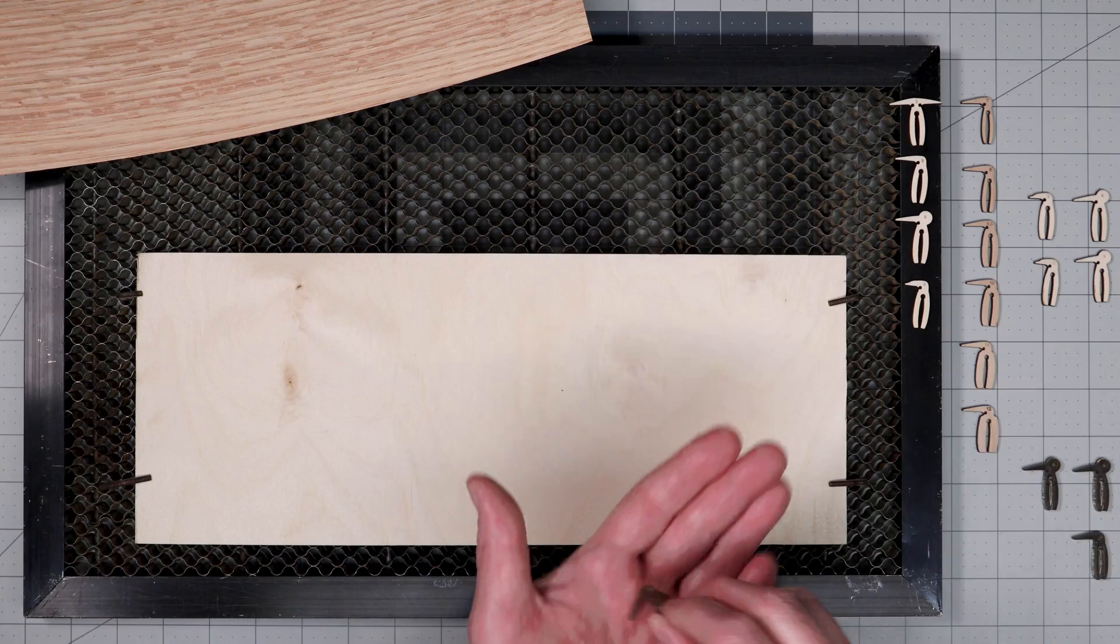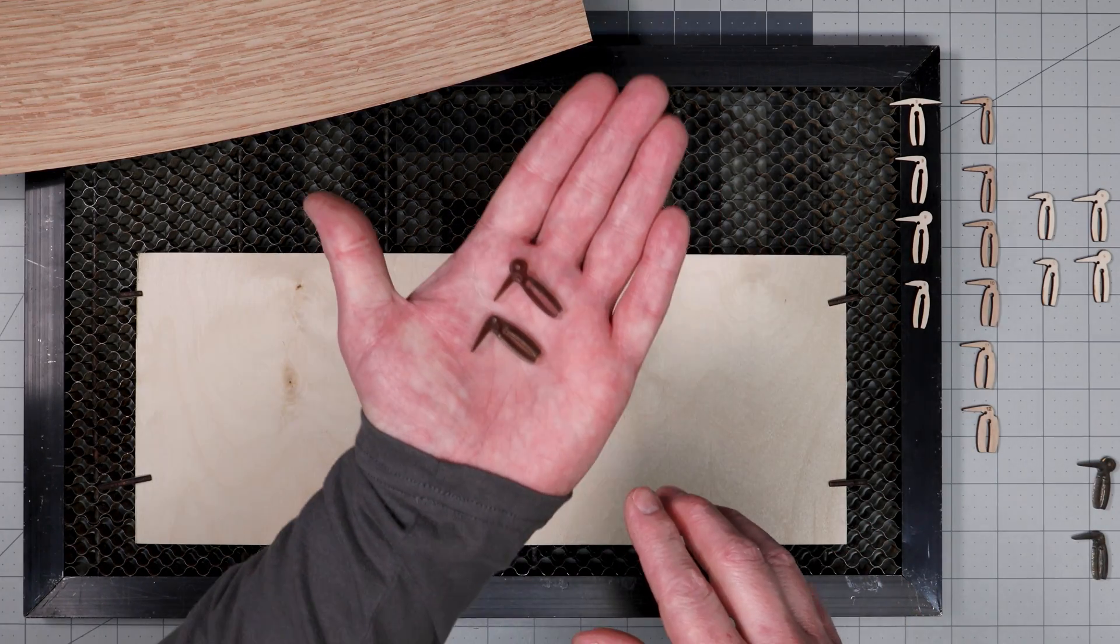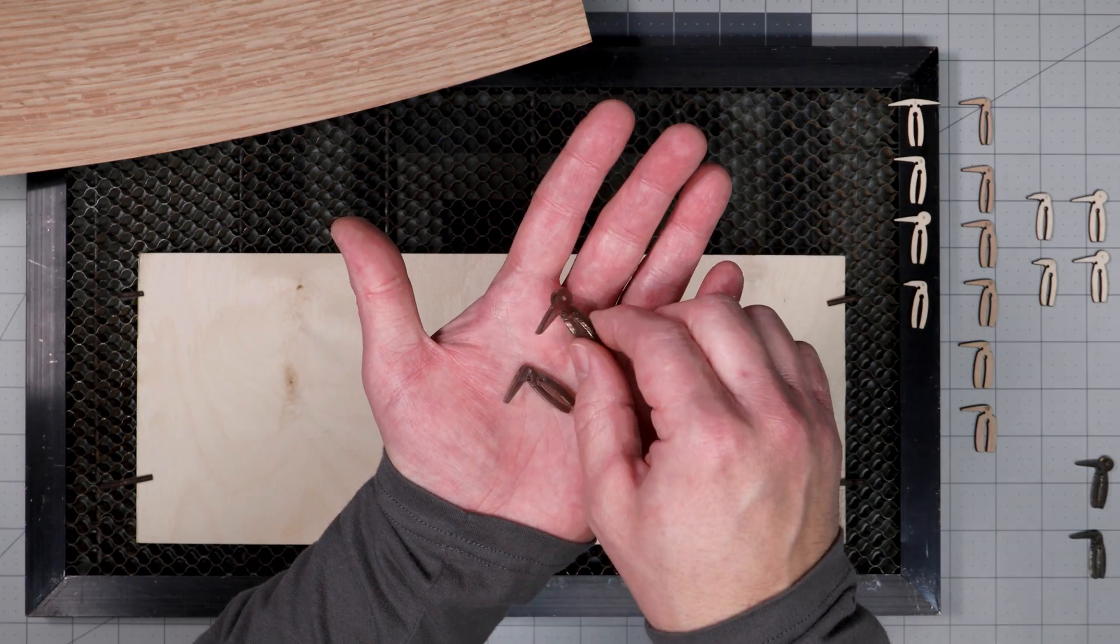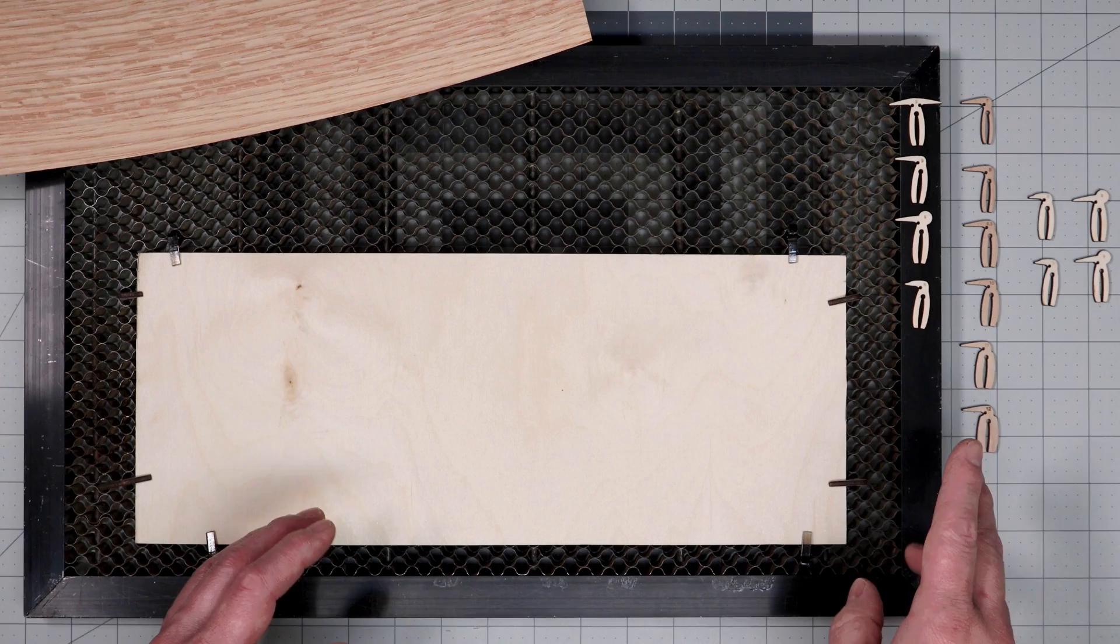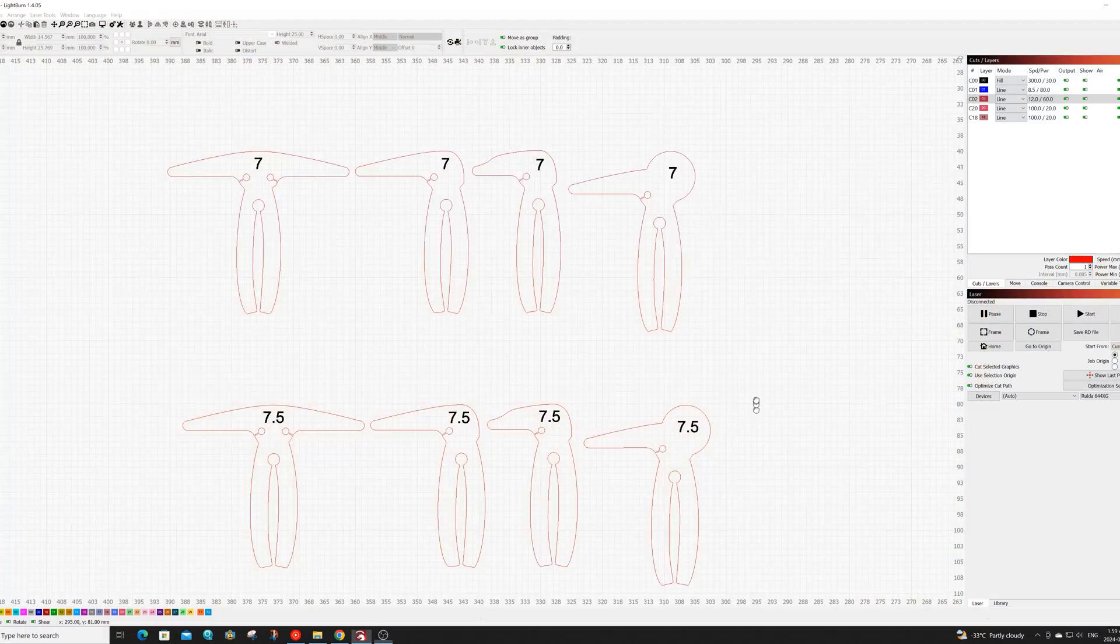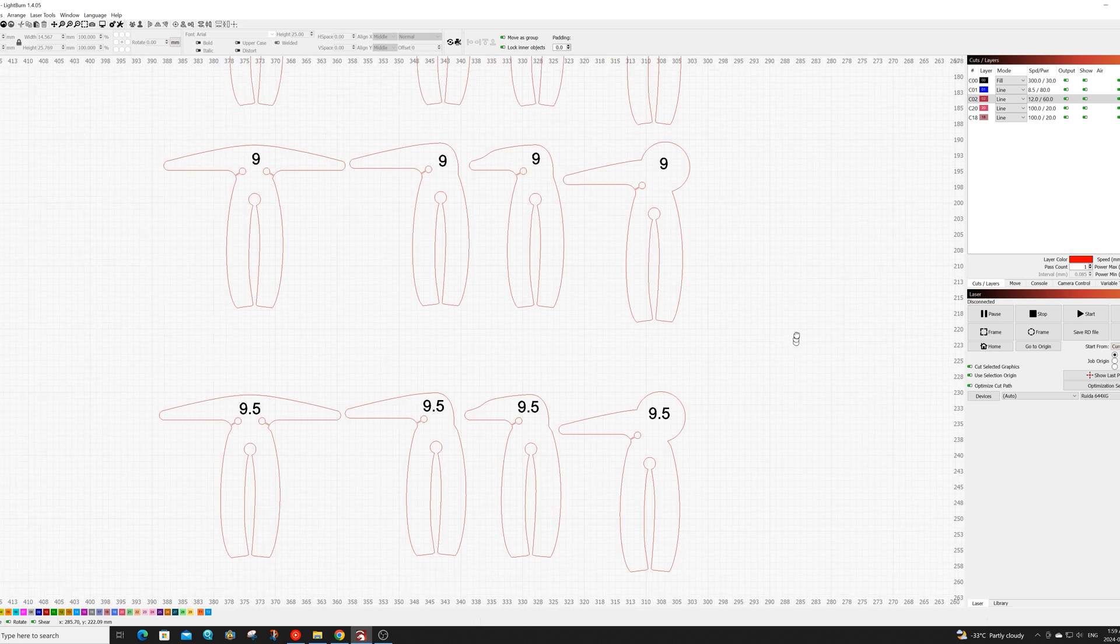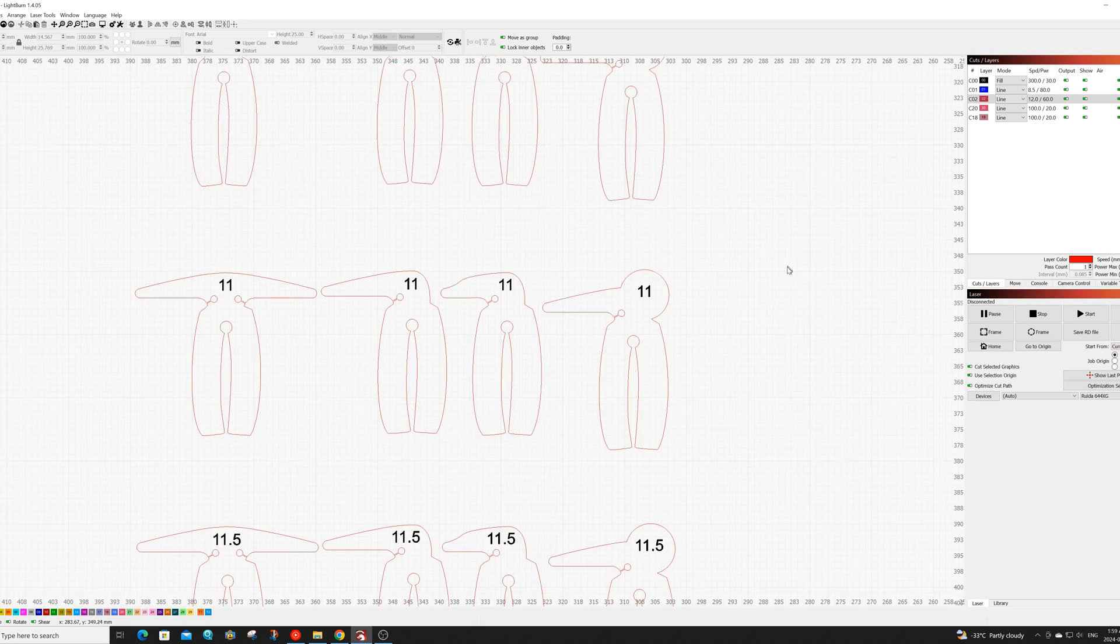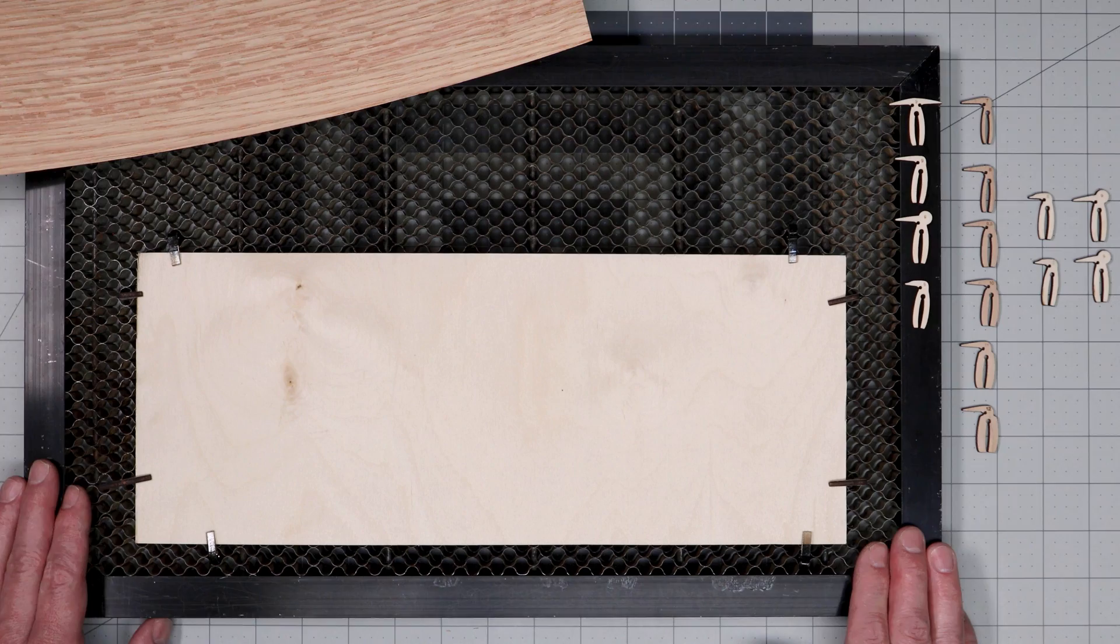I typically cut my pins from scrap eighth inch Baltic birch plywood but you can also cut them out of acrylic if that's what you have kicking around. Now if you're interested in my design files for these pins I will have a link where you can grab them for a few bucks in the description below. In the file you'll find my four styles in a variety of different sizes and I'll also have them in Lightburn and SVG formats.